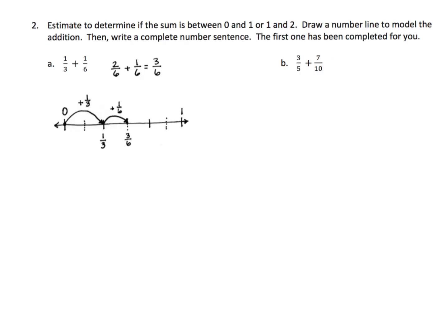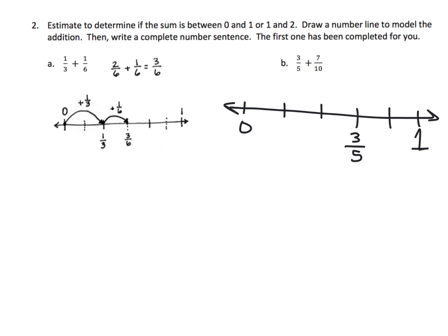Number lines — along the same lines, no pun intended — we're going to start with three-fifths. So we're going to draw our number line and represent three-fifths. We'll start at zero and go to one whole, draw fifths by cutting it into five equal-sized pieces, and identify that three-fifths lives right here. And now we need to move on to adding seven-tenths, so we need to go ahead seven-tenths.